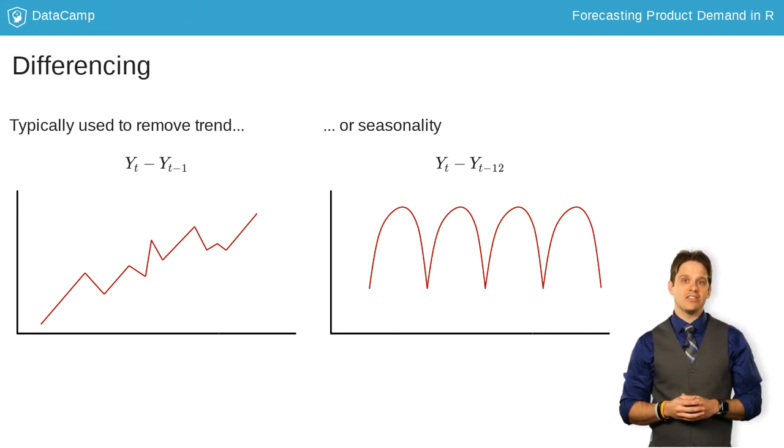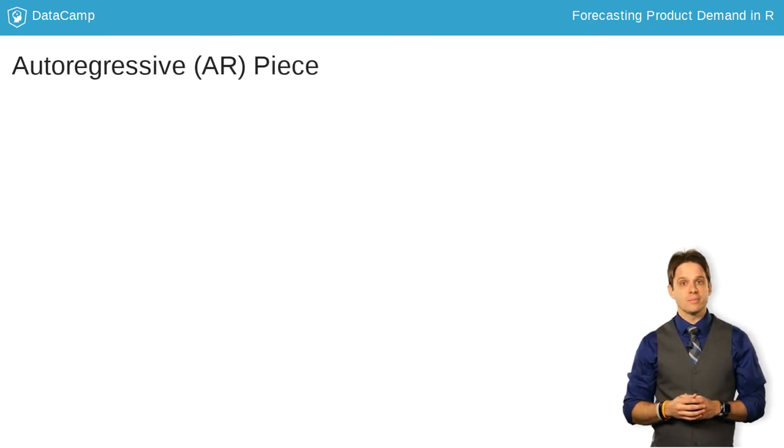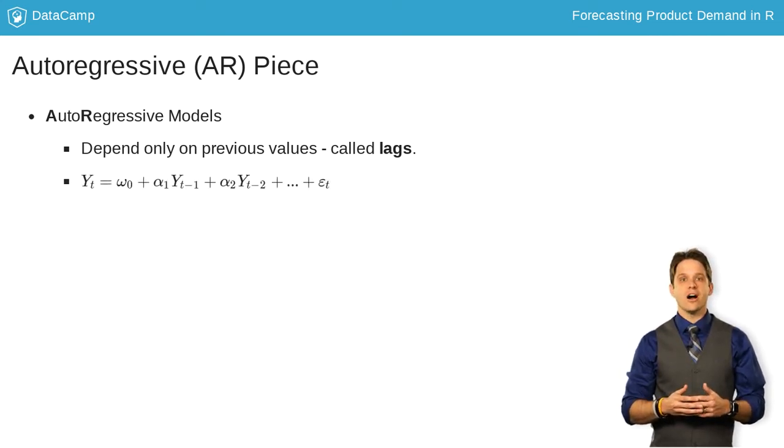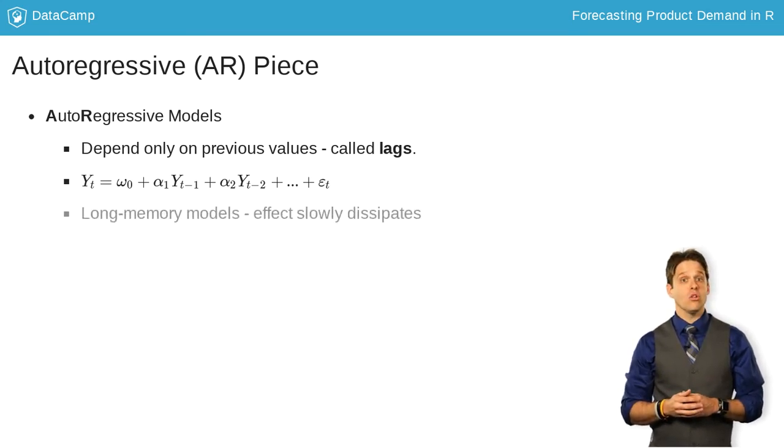Once you have stationary data, you can move to the other pieces of the ARIMA model. Autoregressive models deal with previous values of your data. For example, last month's sales have some residual effect on what sales look like this month. These previous values are called lags and you can have any number of them in your model. They are called long memory models because these effects slowly dissipate across time.